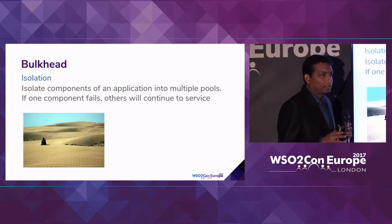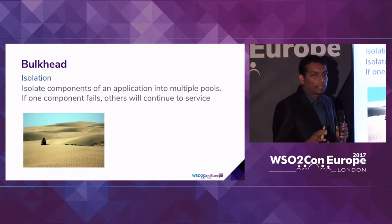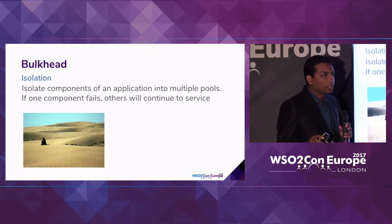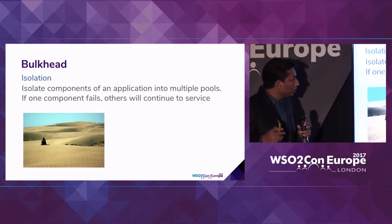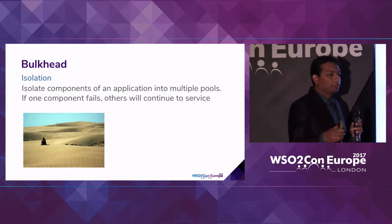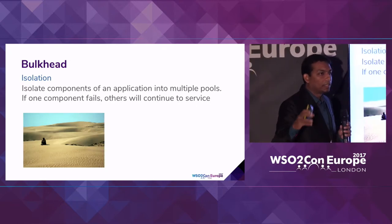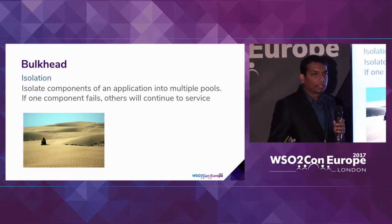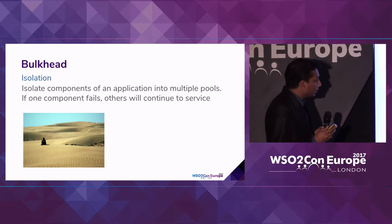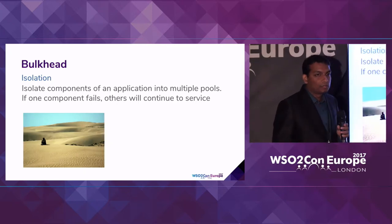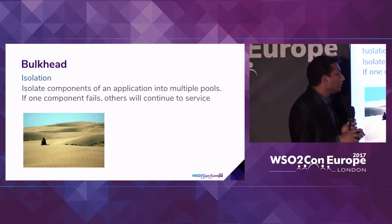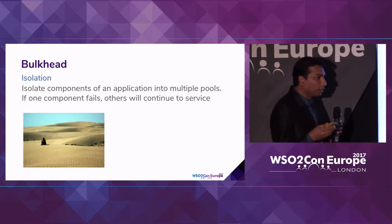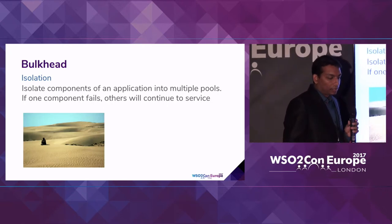When designing a software application, we need to identify components that can operate without much interaction with others. If we can identify such components, when a failure happens in a particular component the rest will still work. This gives us the chance to prevent cascading failures — where if one component fails, as a reaction another one fails, and then another. Another advantage of the bulkhead pattern is that you get the chance to expose services in different service level agreements, giving different levels of service to your consumers.